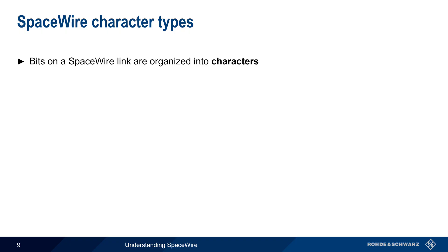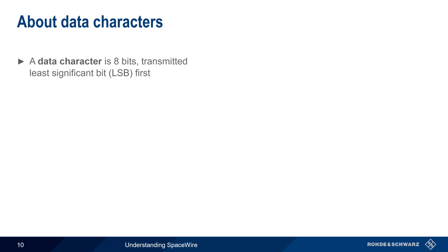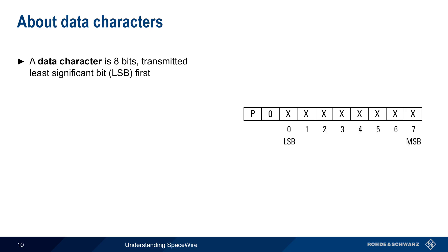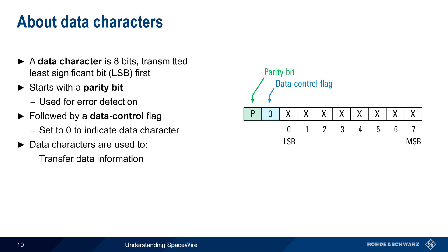The bits on a SpaceWire link are organized into characters, and these characters are grouped into two categories: data characters and control characters. A data character is 8 bits long, transmitted least significant bit first. These data bits are preceded by two non-data bits. The first of these is the parity bit, which is used for detecting bit errors. The next bit is the data-control flag, which is set to zero to indicate that this is a data rather than a control character. Data characters are primarily used to transfer user data, but they're also used to encode the destination address of a routed packet.